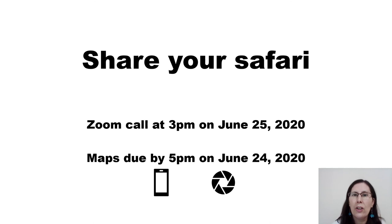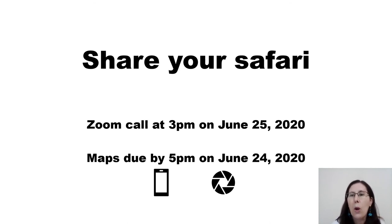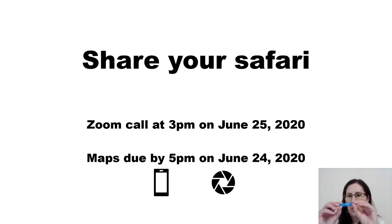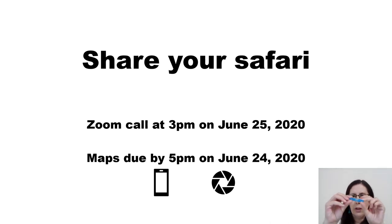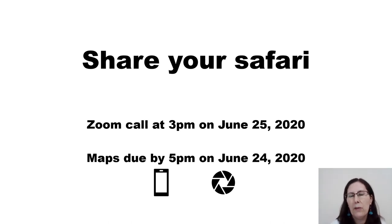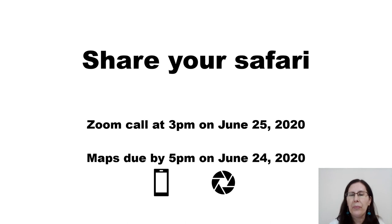Afterwards you're going to share your safari. Turn your map in by five o'clock on June 24th. Then we're going to have a Zoom call on June 25th at 3 p.m. and we're going to do a live drawing. I'm going to award two macro lenses for your cell phone — it's just a little rubber band macro lens — one for a Livingston County 4-H member and one for an Ontario County 4-H member, so that they can use the macro lenses to take photos of insects.